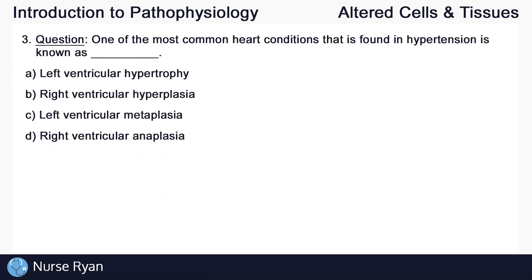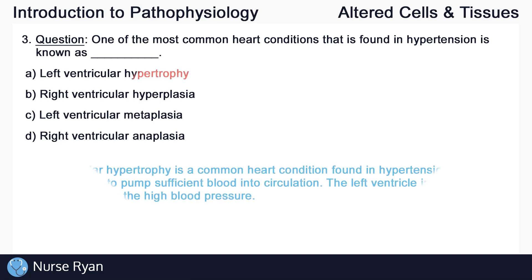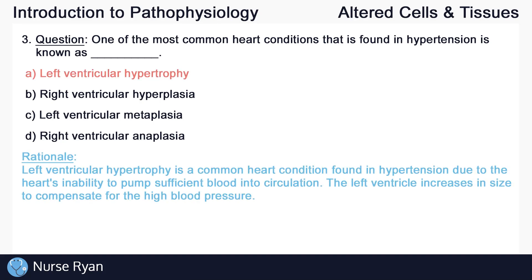Question number 3: one of the most common heart conditions that is found in hypertension is known as? The answer here is A — left ventricular hypertrophy. Left ventricular hypertrophy is a common heart condition found in hypertension due to the heart's inability to pump sufficient blood into circulation. The left ventricle increases in size to compensate for the high blood pressure.